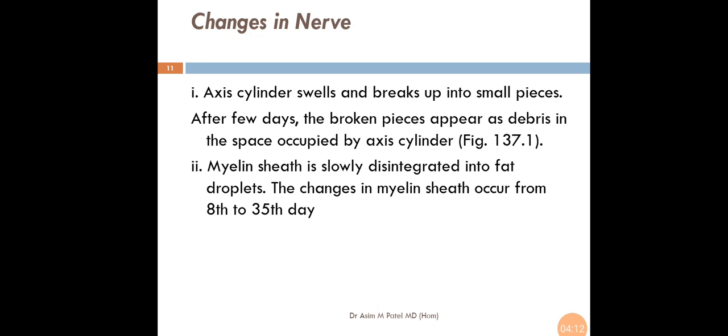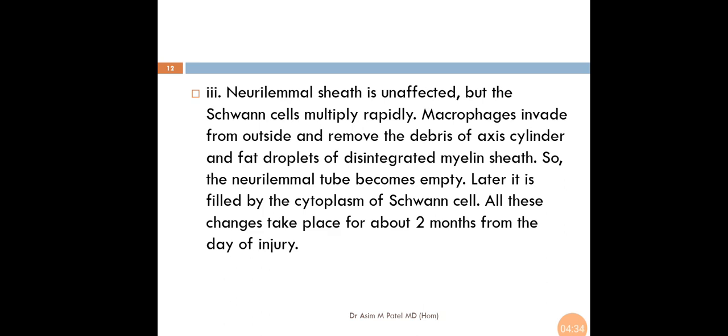The changes in the nerve fiber: axon cylinder swells and breaks up into small pieces. After few days, the broken pieces appear as debris in the space occupied by axon cylinder. Myelin sheath is slowly disintegrated into fat droplets. The changes in myelin sheath occur from 8th through 30th day. The neurolemmal sheath is unaffected but the Schwann cells multiply rapidly. Macrophages invade from outside and remove the debris of axon cylinder and fat droplets of disintegrated myelin sheath.